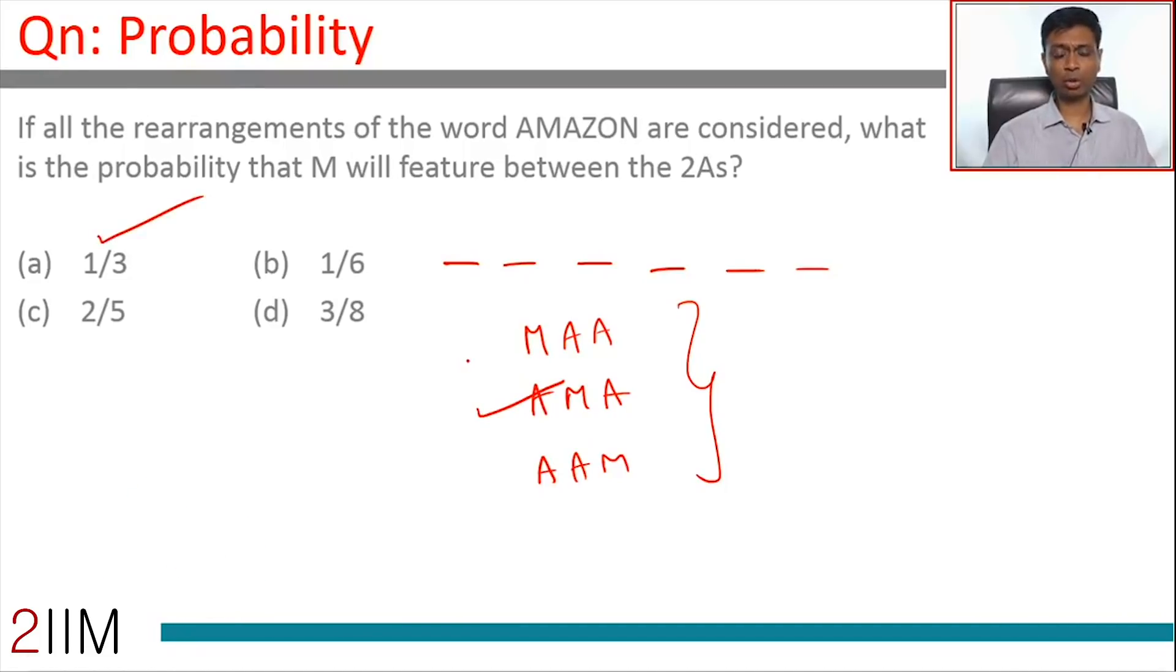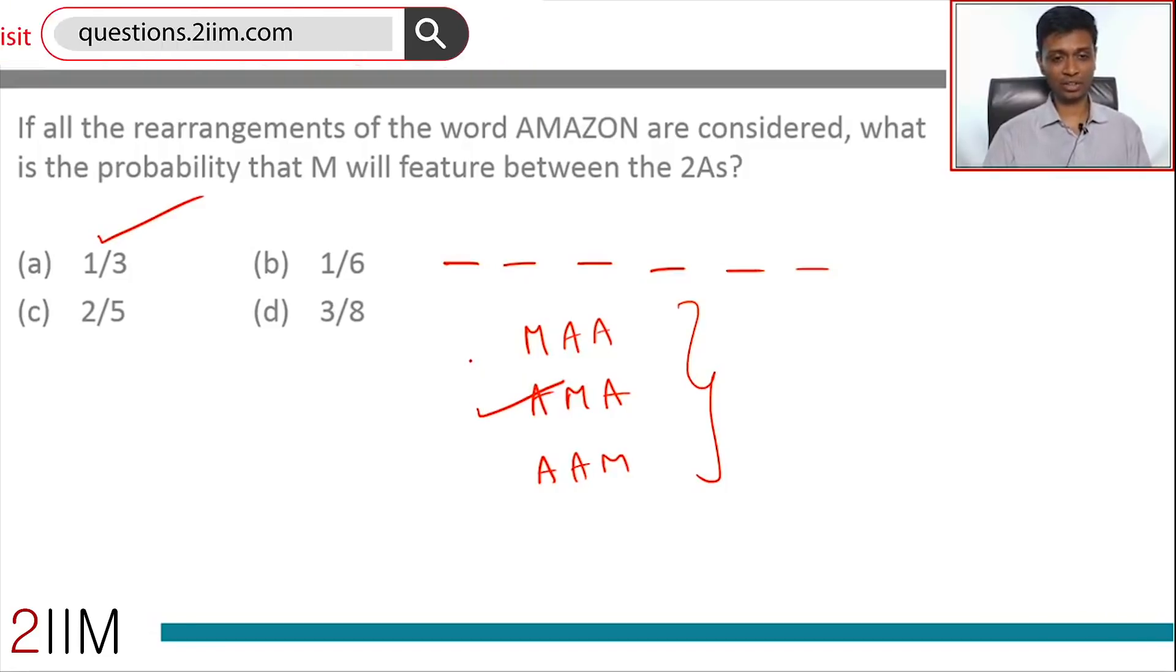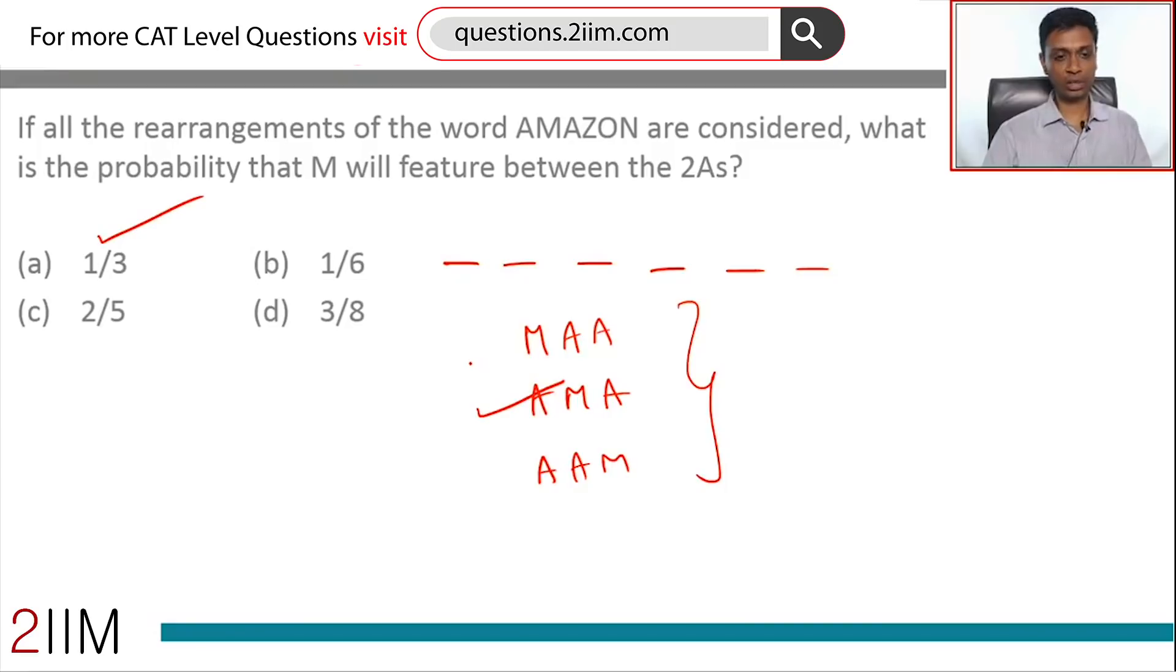So directly you can get to the answer. The other three letters do not matter at all. We're going to see why that is the case. What is the underlying idea behind only these three letters mattering? Just for argument's sake, let's say that A, M, and A are in slots two, three, and six.